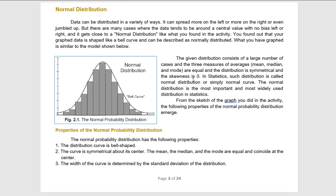Looking at the module, this is what normal distribution looks like — better than the one I graphed. The given distribution consists of a large number of cases and the three measures of averages — mean, median, and mode — are equal. The distribution is symmetrical and the skewness is zero. Symmetrical means whatever is on the left is also on the right. So from the sketch of the graph you did in the activity, the following properties of the normal probability distribution emerge.